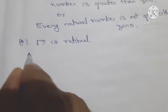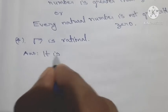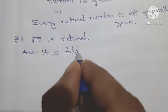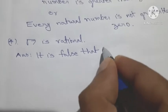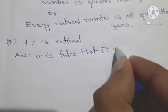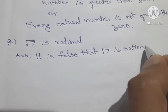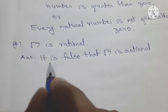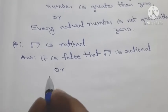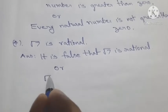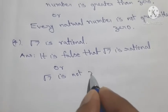It is false that root 7 is rational. The negation: root 7 is not rational.